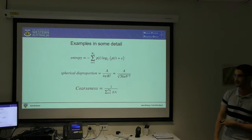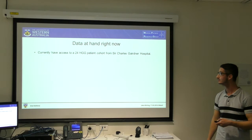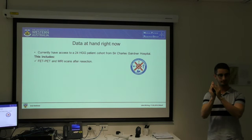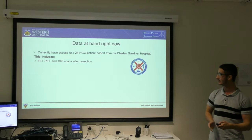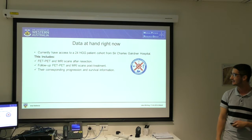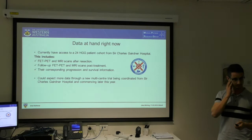At the moment we have 24 high-grade glioma patient cohorts — grade 3 and 4 gliomas from Sir Charles Gairdner. The patients get diagnosed, have surgery, then an initial MRI and FET-PET after surgery. Then chemotherapy and radiotherapy, followed by a follow-up MRI and FET-PET scan. We also have the corresponding progression and survival information. We could also expect more data through a new multi-centre trial potentially commencing later this year, being coordinated here as well.